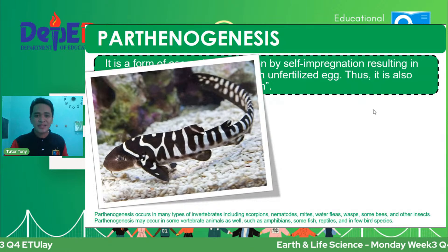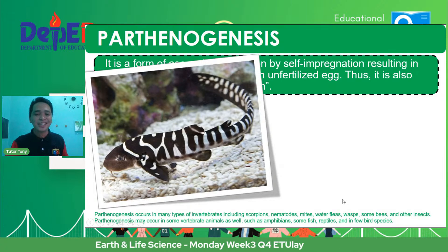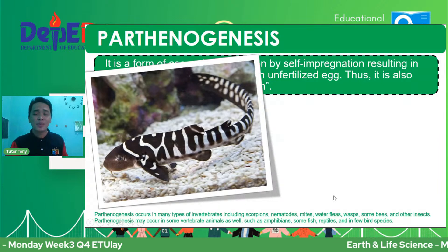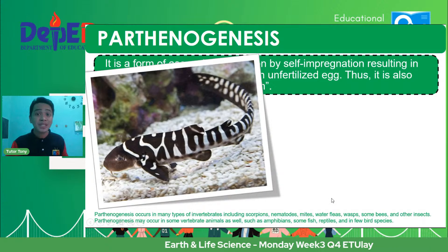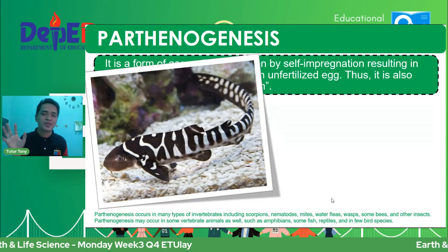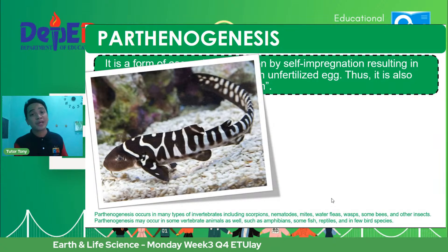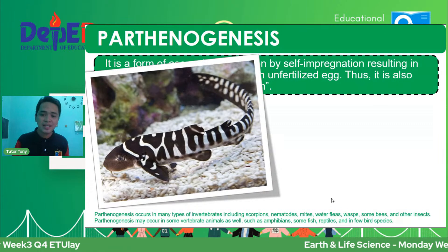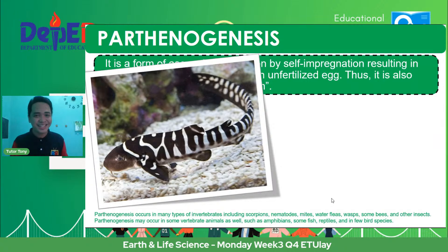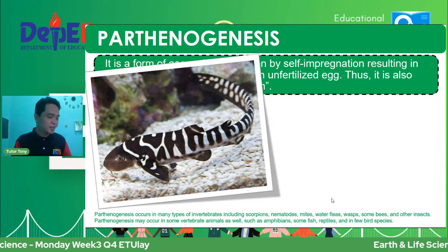A lot of living organisms can actually perform parthenogenesis. Other organisms include scorpions, nematodes, mites, water fleas, wasps, some bee species, and other insects — mostly lower forms of animals and invertebrates, kaya mabilis-bilis silang dumami. It can also be performed by vertebrates like amphibians, some fish, reptiles, and a few bird species. But for humans, kailangan pa rin ng male at female para makapag-reproduce ng bagong organism.